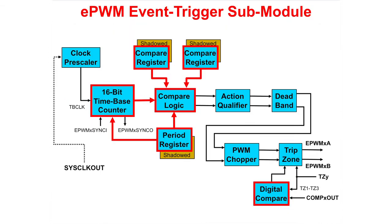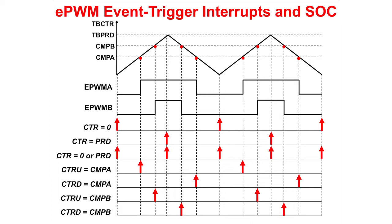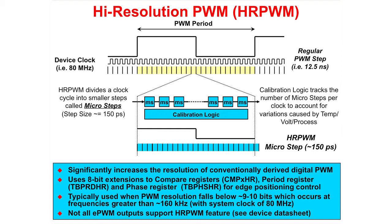The event trigger submodule is used to provide a triggering signal for interrupts and the start-of-conversion for the ADC. Event trigger interrupts and starter conversions can be generated on counter equal zero, counter equal period, counter equal zero or period, counter up equal compare A, counter down equal compare A, counter up equal compare B, and counter down equal compare B. The high-resolution PWM feature significantly increases the resolution of conventionally derived digital PWM. High-res PWM divides a clock cycle into smaller steps called microsteps, with a step size of approximately 150 picoseconds. This is typically used when PWM resolution falls below approximately 9 or 10 bits, which occurs at frequencies above approximately 160 kHz with a system clock of 80 MHz.